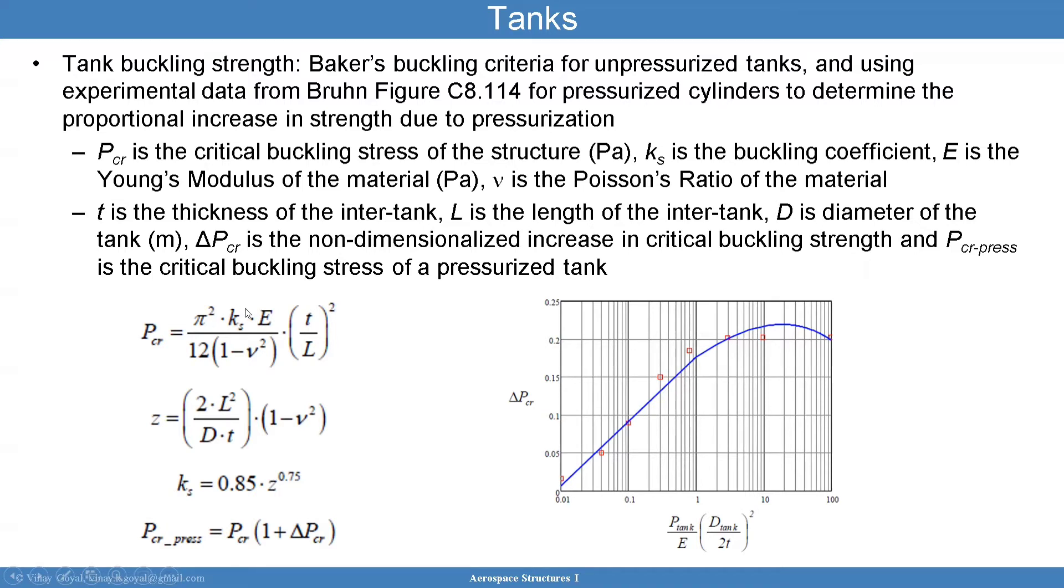To calculate the increase in buckling strength due to the action of pressure, you can imagine if you have a can of Coke and it was fully full of fluid it would be harder to buckle it than something that's not full of fluid. So you plug in P tank the pressure in the tank, D tank is the diameter over 2TE, and then you figure out where you are. Depending upon where you are you select the value delta, say another 15% increase, and this becomes your real critical buckling stress due to the effects of pressure accounted for. It's always going to increase if there's any amount of pressure in the tank.